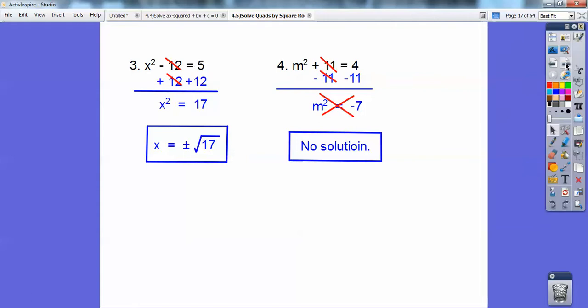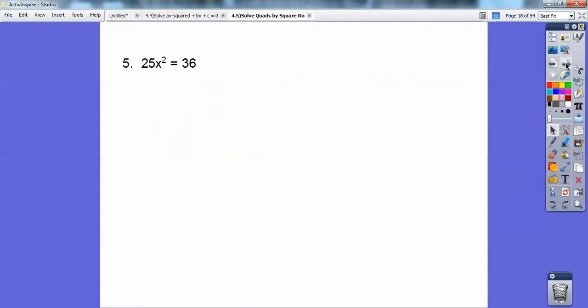So here, I'm going to divide both sides by 25, and I get x squared equals 36 over 25, and then square root both sides, it's going to be plus or minus that. Plus or minus the square root of 36, which is 6, over the square root of 25, so you get plus or minus 6 fifths.